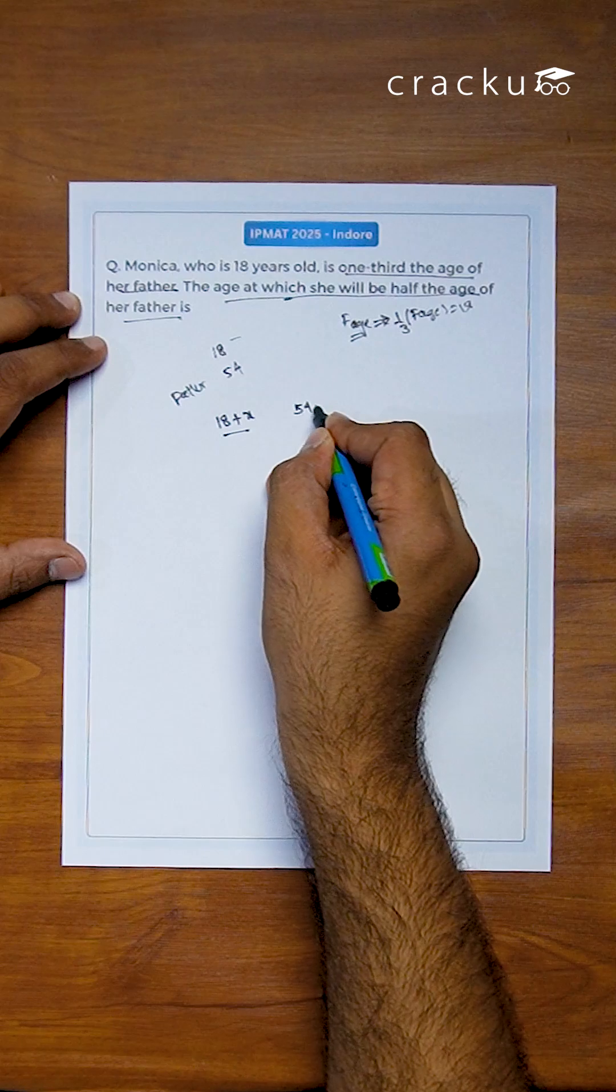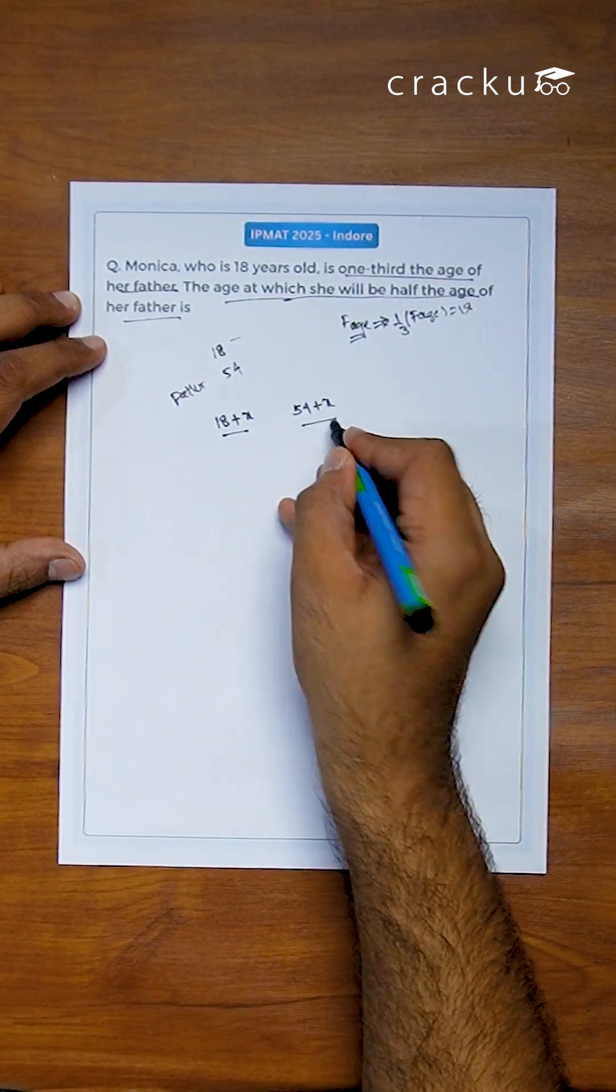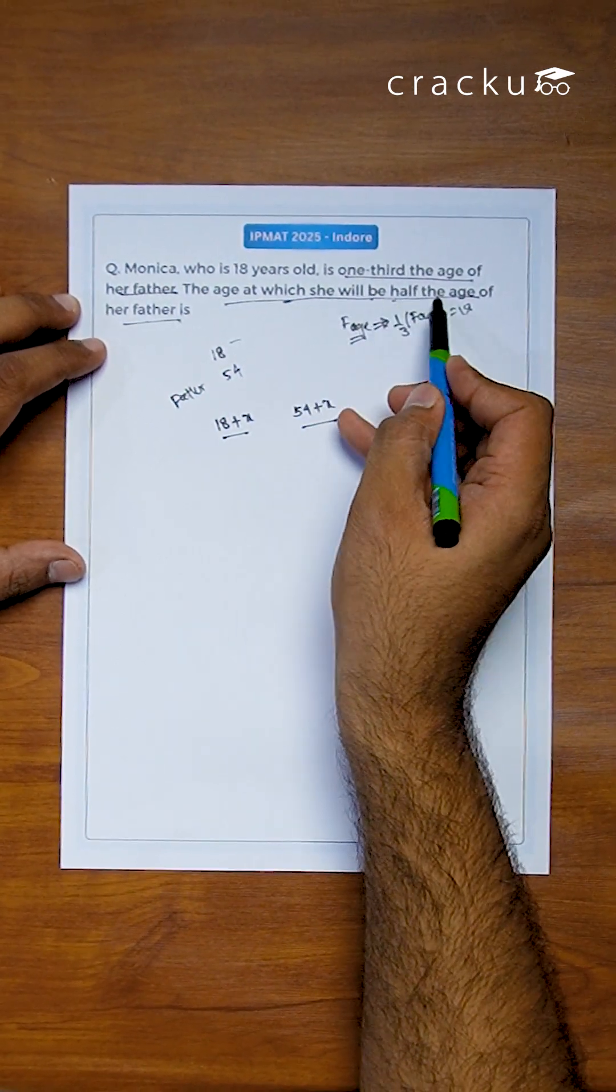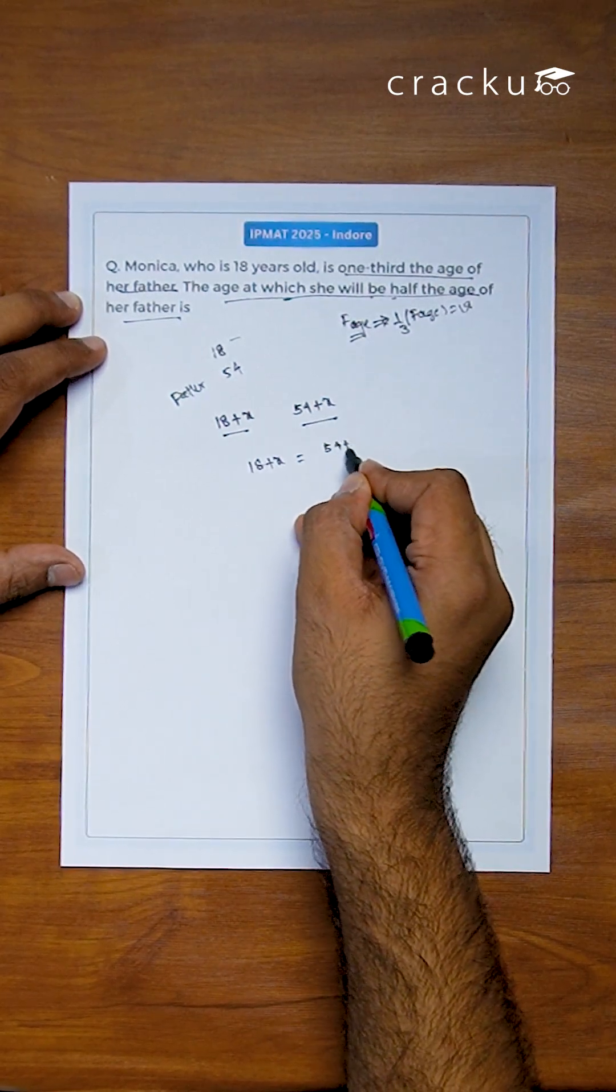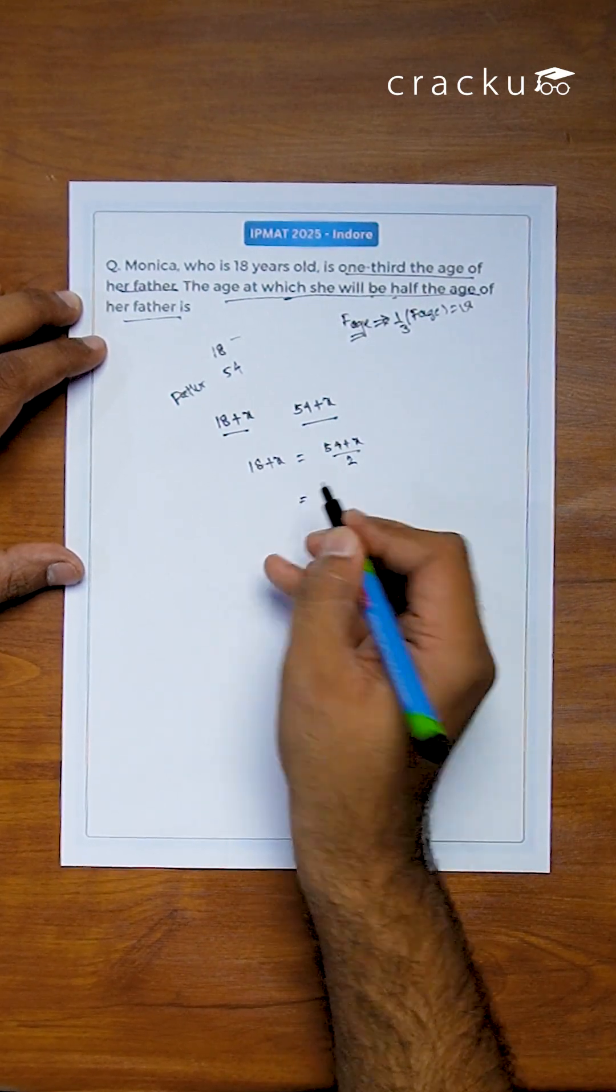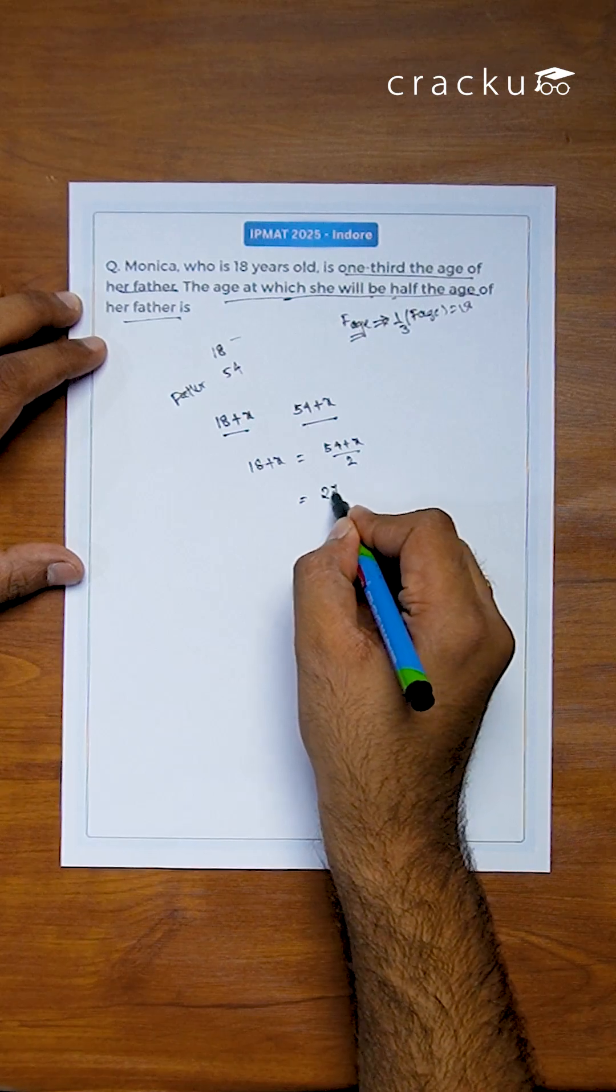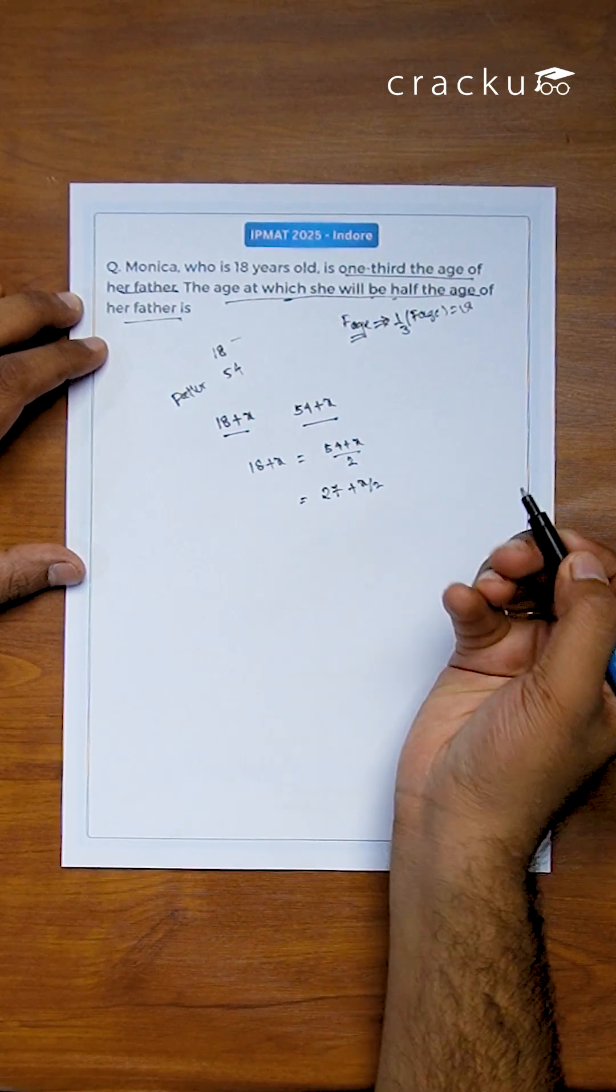Now it is said that at what age she will be half the age, that is what x value. 18 plus x will be 54 plus x by 2. What is 54 by 2? This is 27. What is x by 2? x by 2.